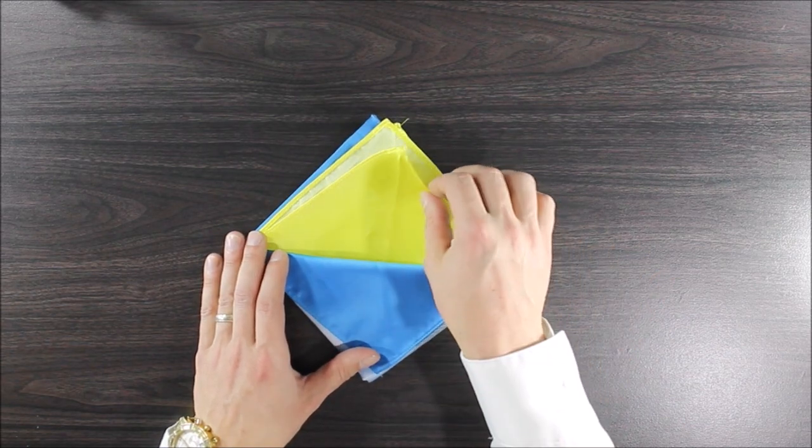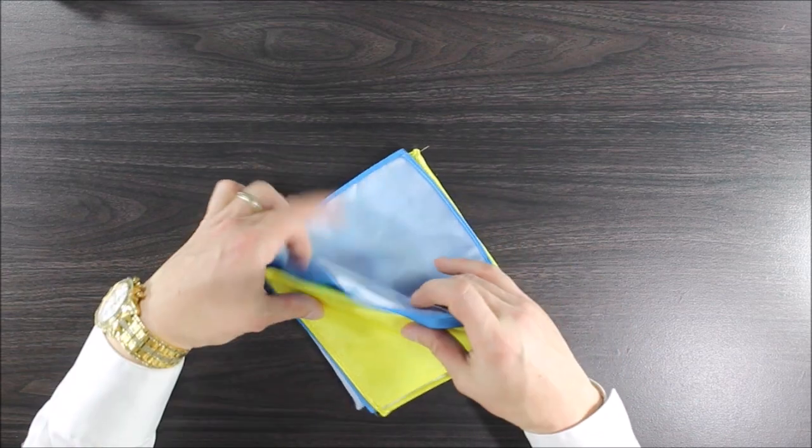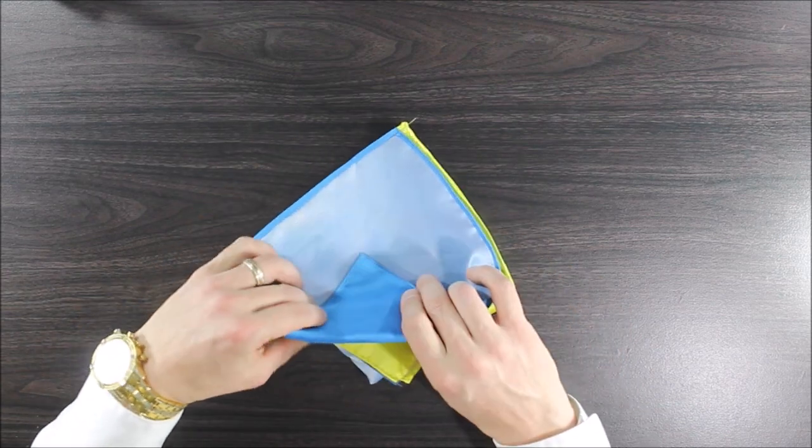So my first color I want to be yellow at the bottom and then blue. Fold that, tuck it into the pocket.